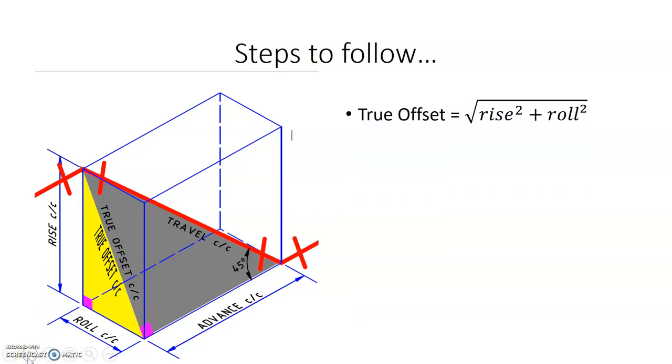So to find the true offset, we need to know our rise. We need to know our roll number. And what we do is we take our rise number, we square it. We take our roll number, we square it. We add them together. And when we add them together we square root them. So it's much like trying to find the hypotenuse like I had mentioned before.